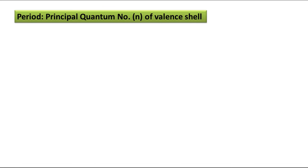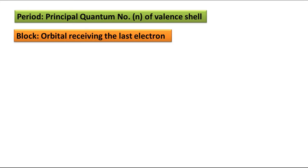What is period? Period is the principal quantum number, denoted by small n, of the valence shell. What about block? Block is that orbital — it may be s, d, or p — depending on which orbital is receiving the last electron.